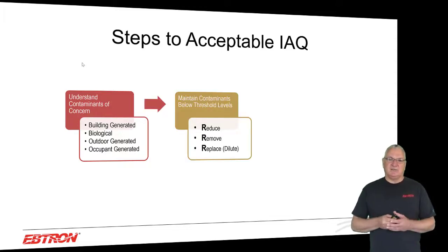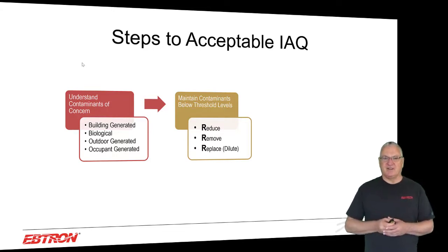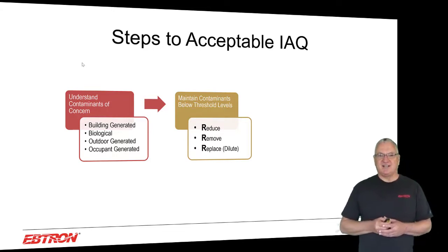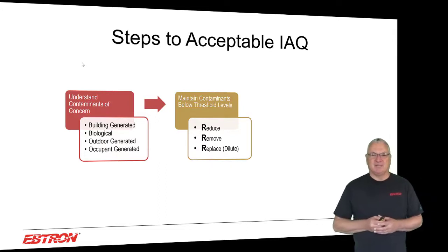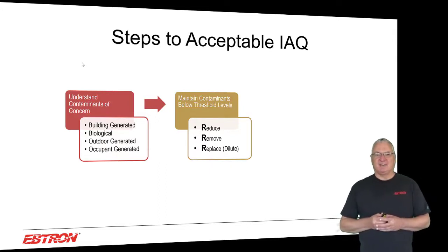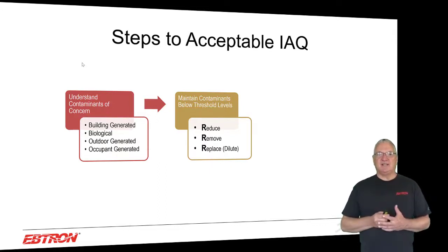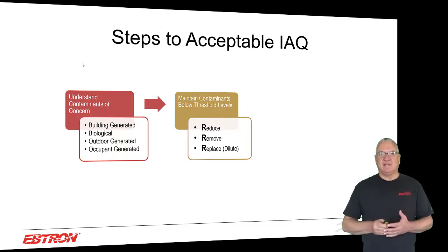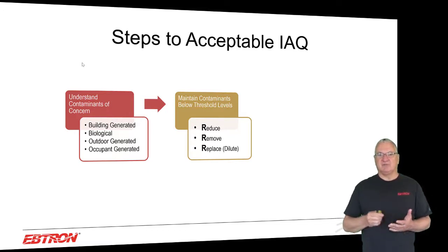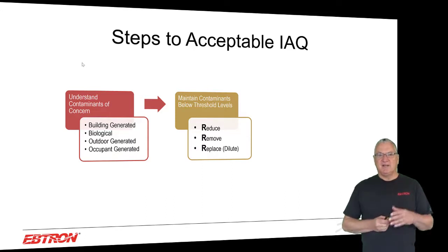There are three things we can do about it. I like to use the three R's, even though it's not technically correct for the last one. We can reduce the contaminants, we can remove the contaminants, and we can replace the contaminants — which is really more properly called dilute the contaminants.